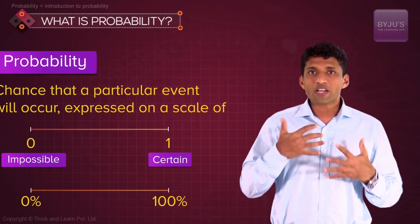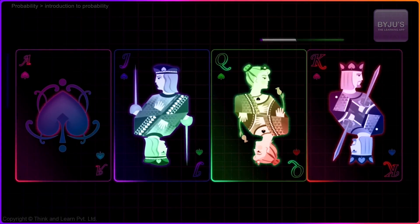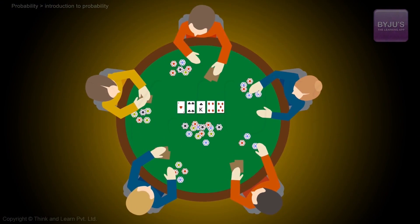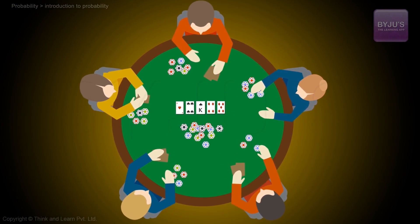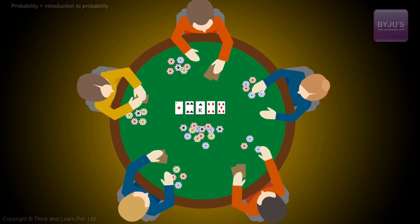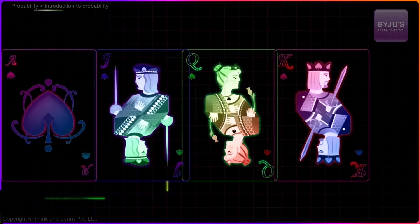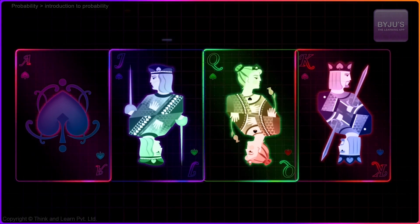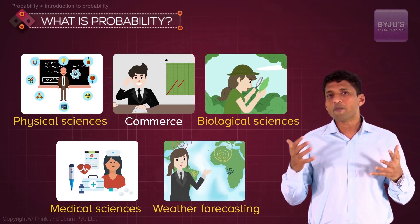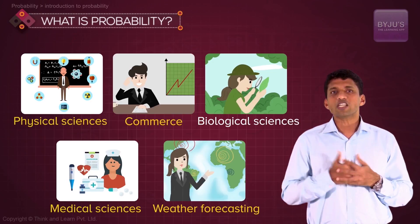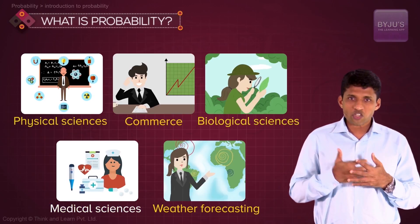We'll understand this in detail in this section. This branch of probability, though it started with gambling, has been widely used in almost every field — physical sciences, commerce, biological science, medical science, weather forecasting, and almost everywhere.